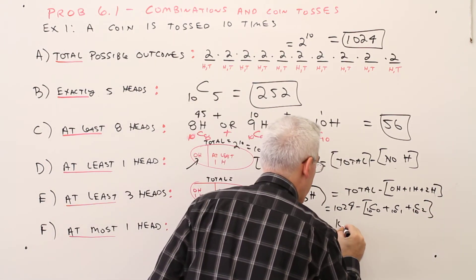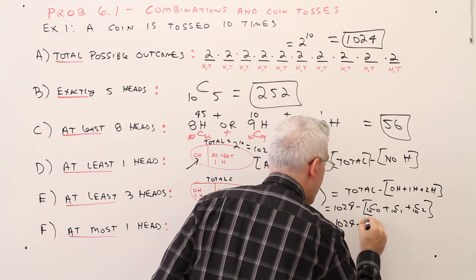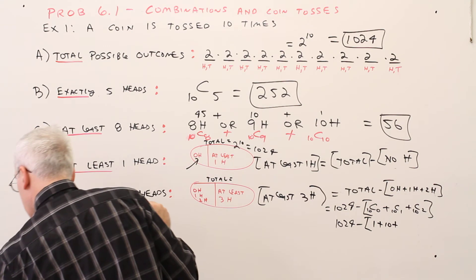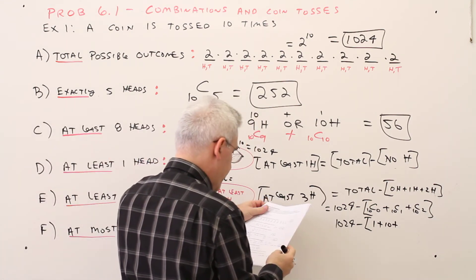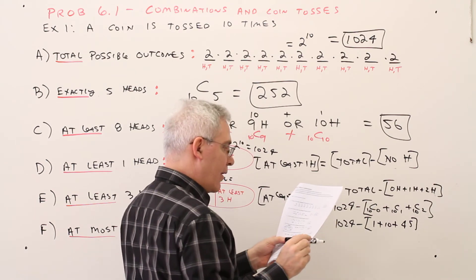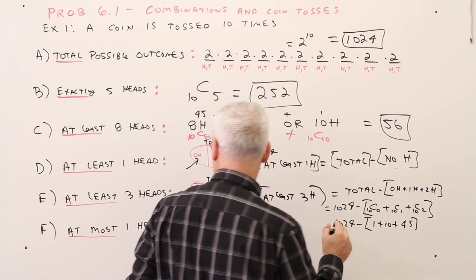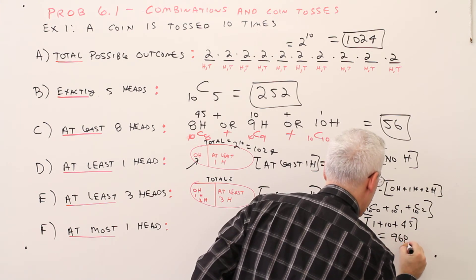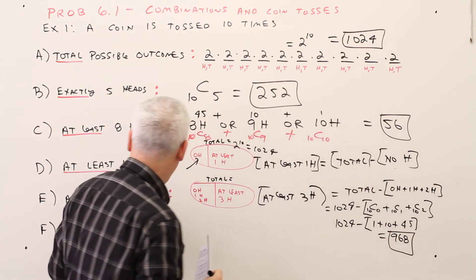So that's going to equal 1024 minus 10 choose 0 plus 10 choose 1 plus 10 choose 2. So it's going to be 1024 minus 1 plus 10 plus, I've got it over here, 45. And if you compute that you get 968. I'll just put it right here, and that's the answer to part D.